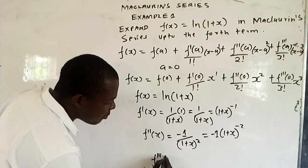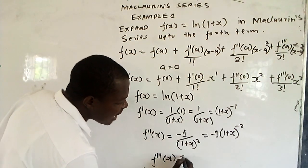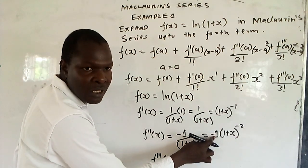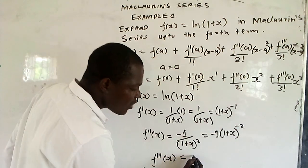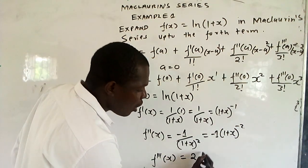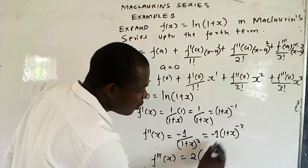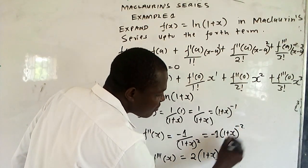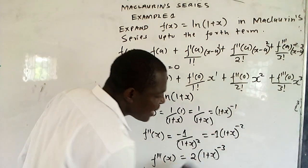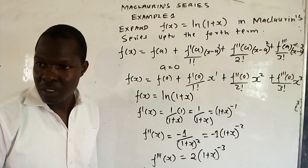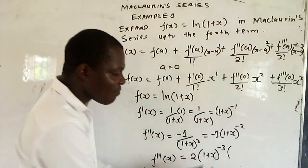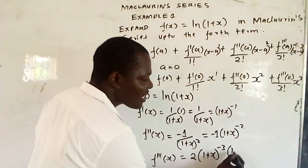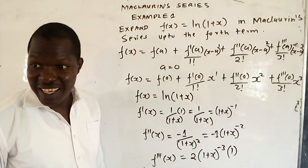If you now want f'''(x), you differentiate again. It is negative 2 times negative 1, which gives positive 2, over (1 + x) raised to negative 3. Then you differentiate the inner function 1 + x, which just gives 1.